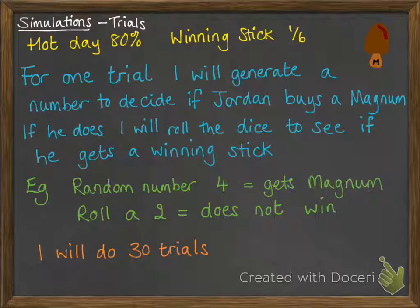We're going to do thirty trials. Thirty is the minimum number of trials to ensure we've got a fair and random selection of results. In the next video we'll look at the results and the calculation section together, so you can move through that bit quite quickly.